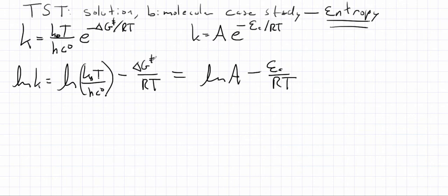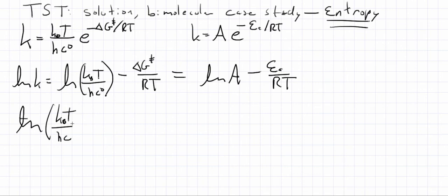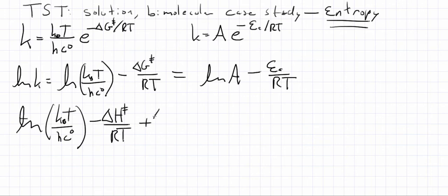Let's split delta G into its two parts, delta H and delta S. We have the log of kT over hc, minus delta H double dagger over RT. Since delta G equals delta H minus T delta S, we get a positive delta S double dagger over R term, because the T cancels.